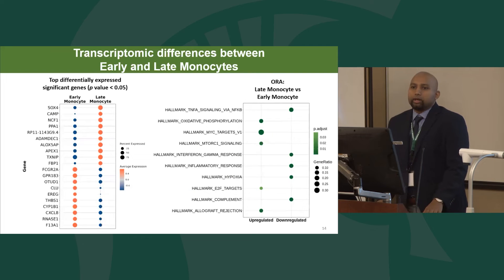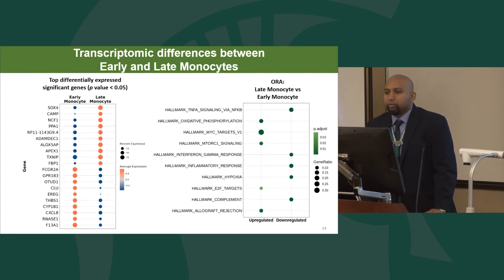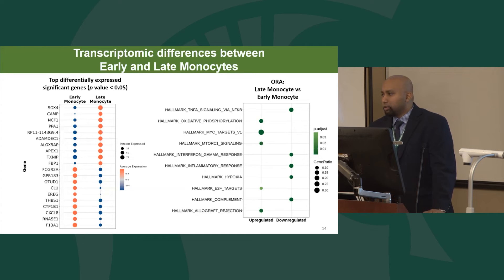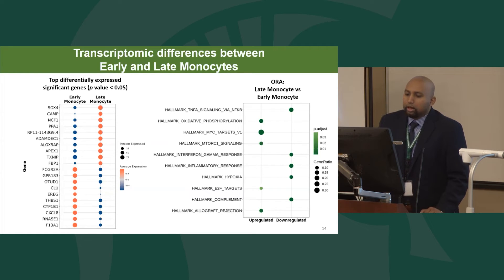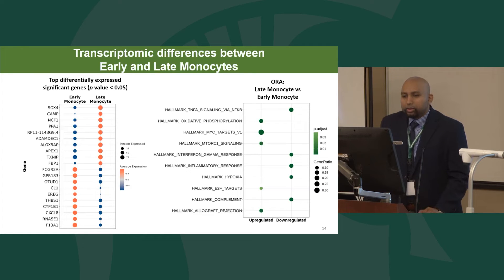Single cell transcriptomics allows us to explore heterogeneity between populations that may appear similar. We noticed the emergence of an early monocyte cluster and a late monocyte cluster, and wanted to understand how they differ. We carried out differential expression analysis between early monocytes and late monocytes and identified several genes that explain the differences, with each dot representing the percentage of cells expressing a particular gene and color representing average scaled expression.